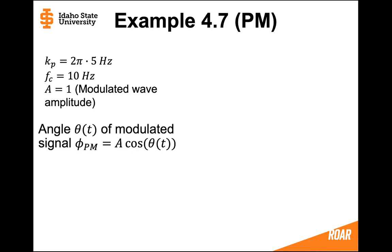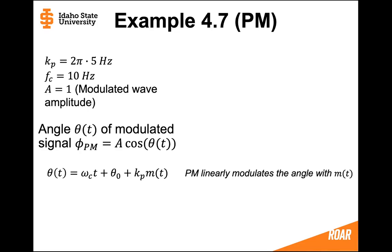If we want to find the angle of the phase modulated signal, normally it would look like this: theta(t) equals the carrier frequency multiplied by time, plus some constant, plus the constant kp multiplied by the message. Note that we'll consider the constant theta-naught to be equal to zero. Normally it's easy to find the angle because phase modulation linearly modulates the angle.